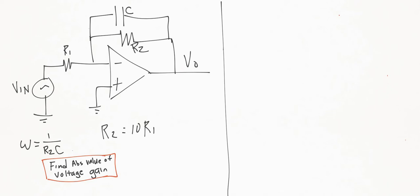We're not given any values—no R1, no Vin, no Vout. All we're given is that R2 is equal to 10R1, and we're also given that the input angular frequency is equal to one over R2 times C. The problem is asking us to find the absolute value of the voltage gain.